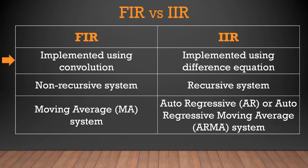The next difference is related with the implementation of the filters. FIR filter is always implemented using convolution integral or convolution sum. In case of discrete time FIR filter, it is implemented by convolution sum, and in case of continuous time FIR filter, it is implemented by using convolution integral. Whereas in case of IIR filter, there is no concept of implementation using convolution. IIR filter is rather implemented by using a difference equation in case of discrete time system, or a differential equation in case of continuous time system.